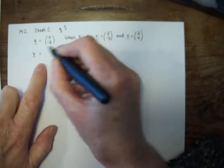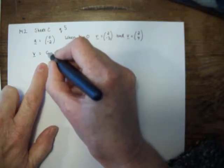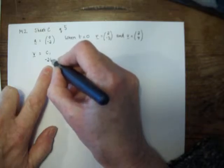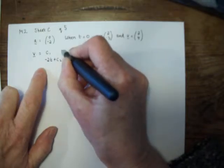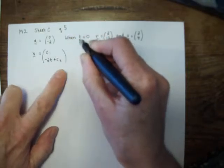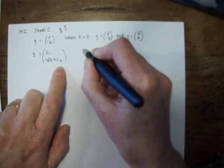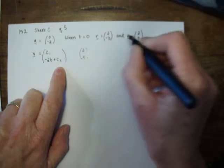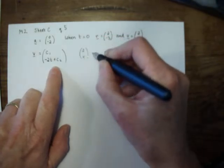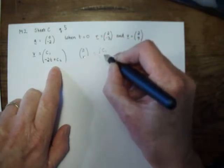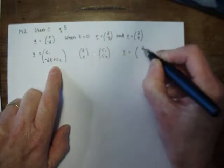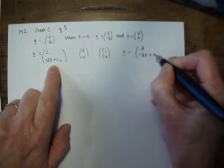So, integrating 0, we get a constant, call it c1. Integrating minus 2, we get minus 2t plus another constant. The initial conditions tell us that when the velocity is 2, 4, and t is 0, we get c1, c2. So we now know the velocity is 2 minus 2t plus 4.